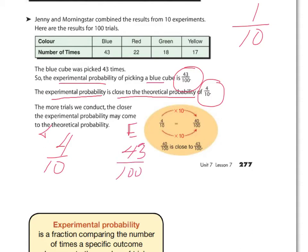To make four-tenths into an equivalent fraction out of a hundred, we multiply by ten — giving forty out of a hundred. That is very close to our experimental result of 43 out of a hundred. So theoretically we expected to pick blue about forty times, and we got 43, which is very close. The more trials we conduct, the closer the experimental probability may come to the theoretical probability, though sometimes it can be quite different.